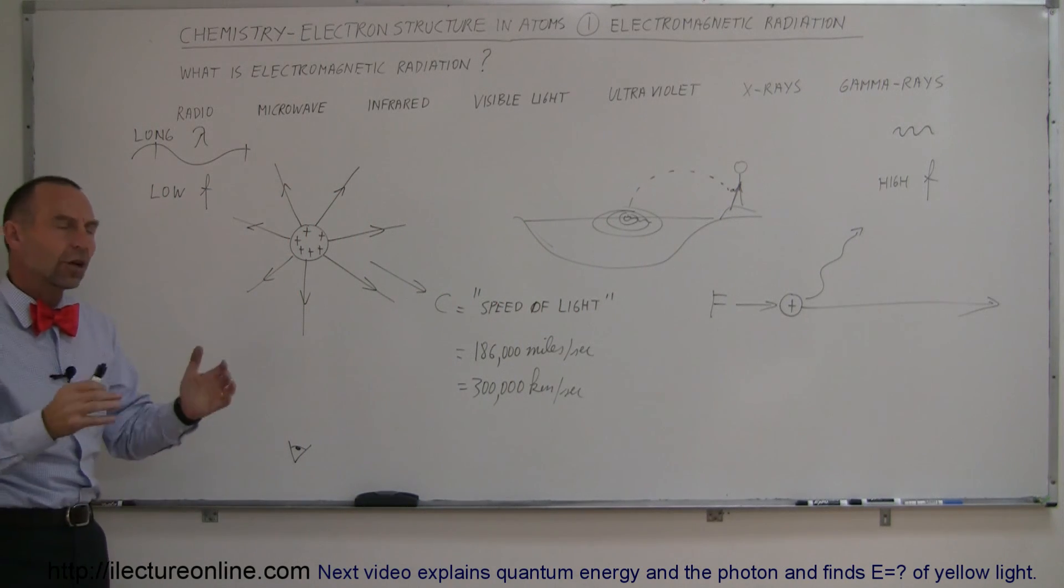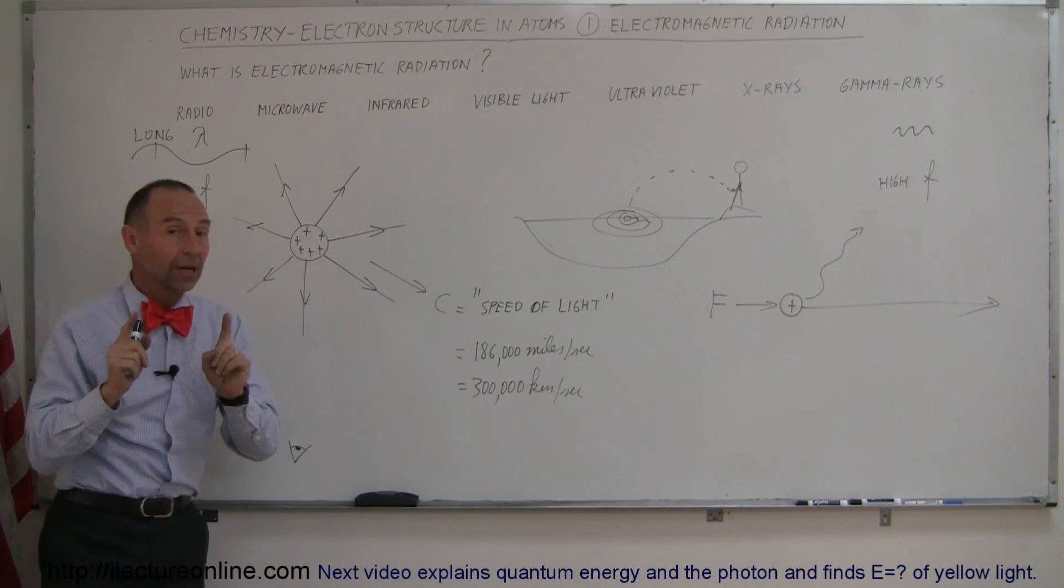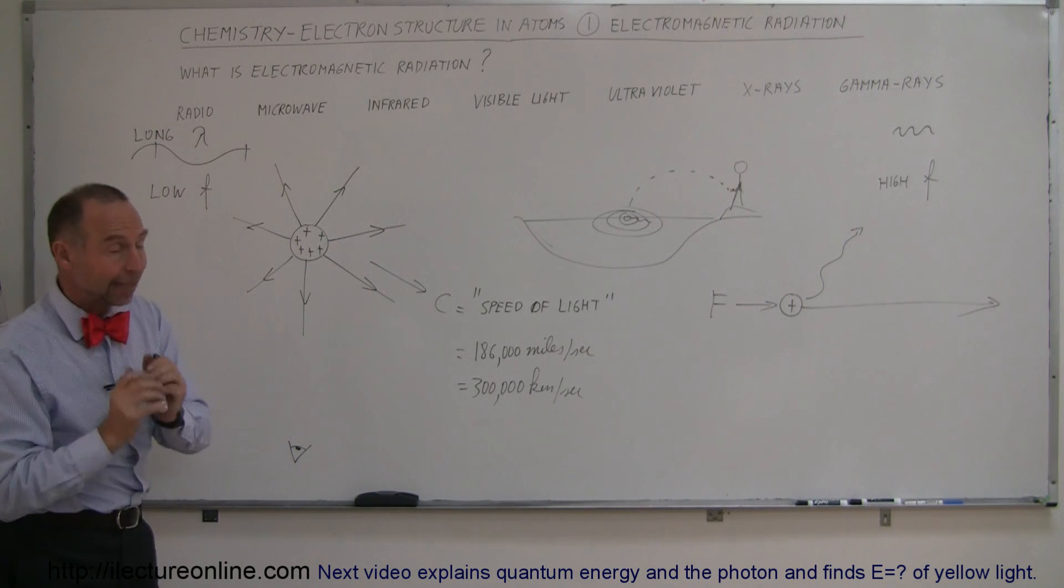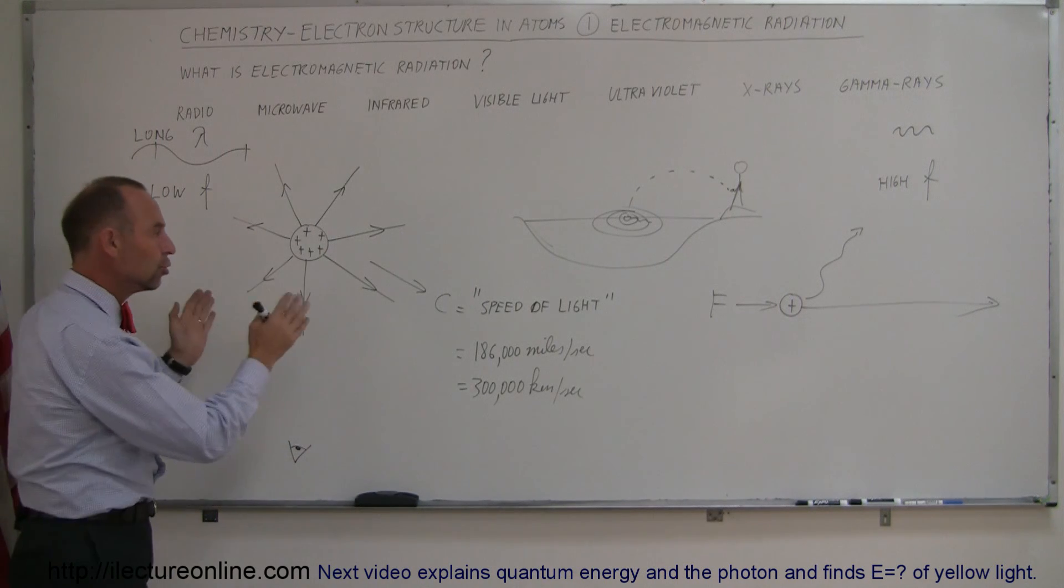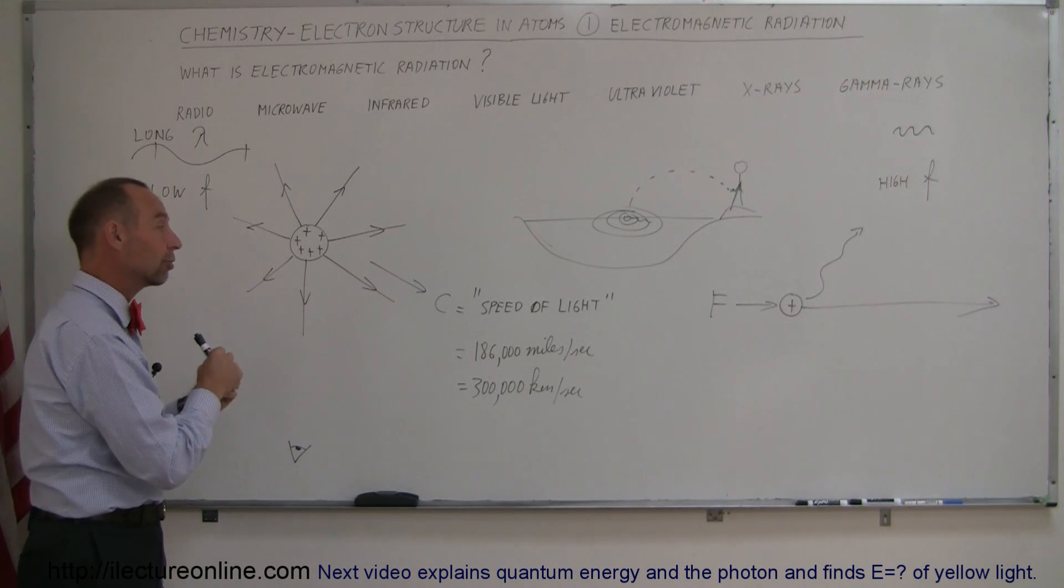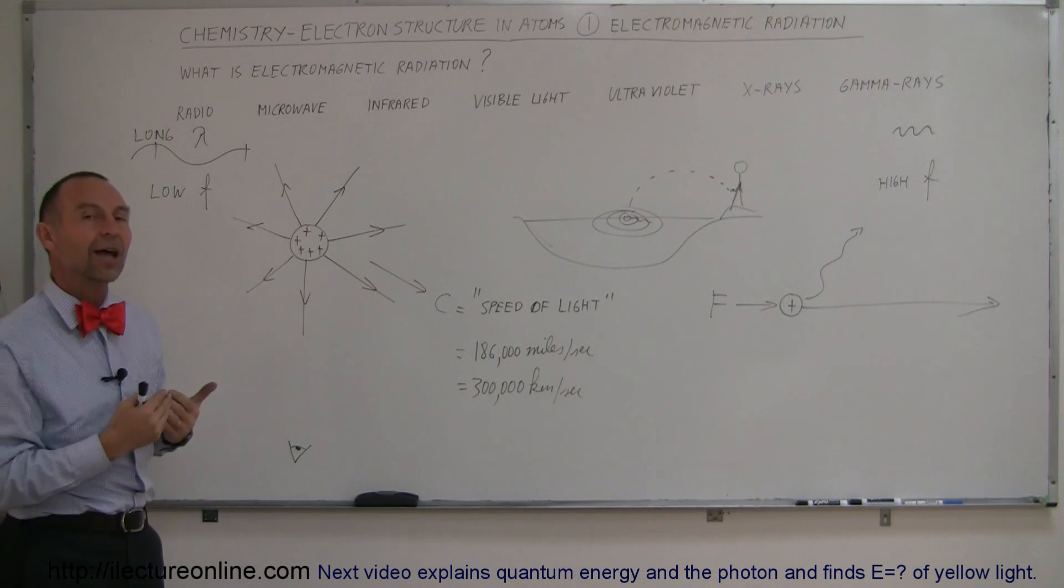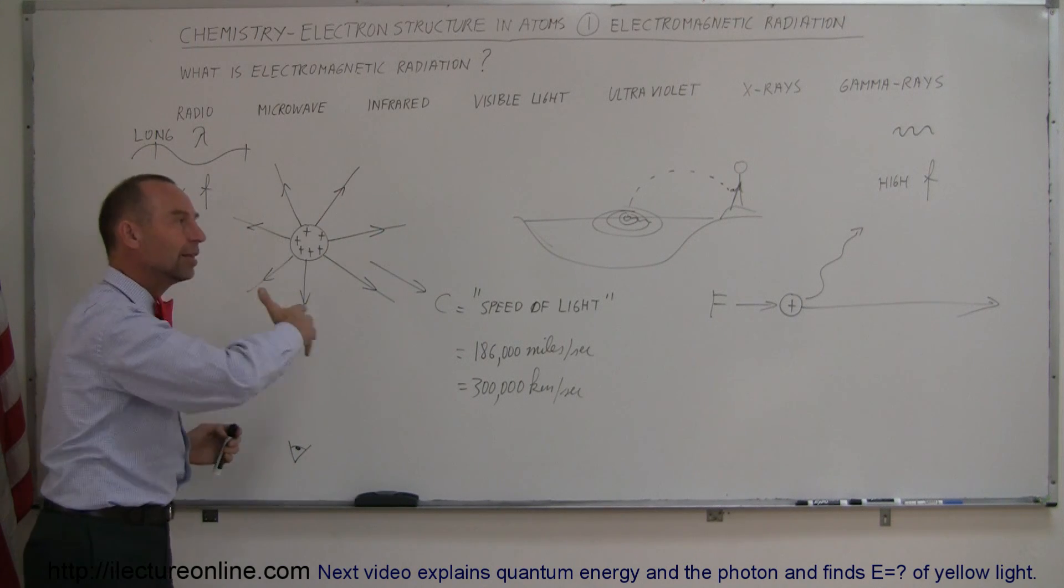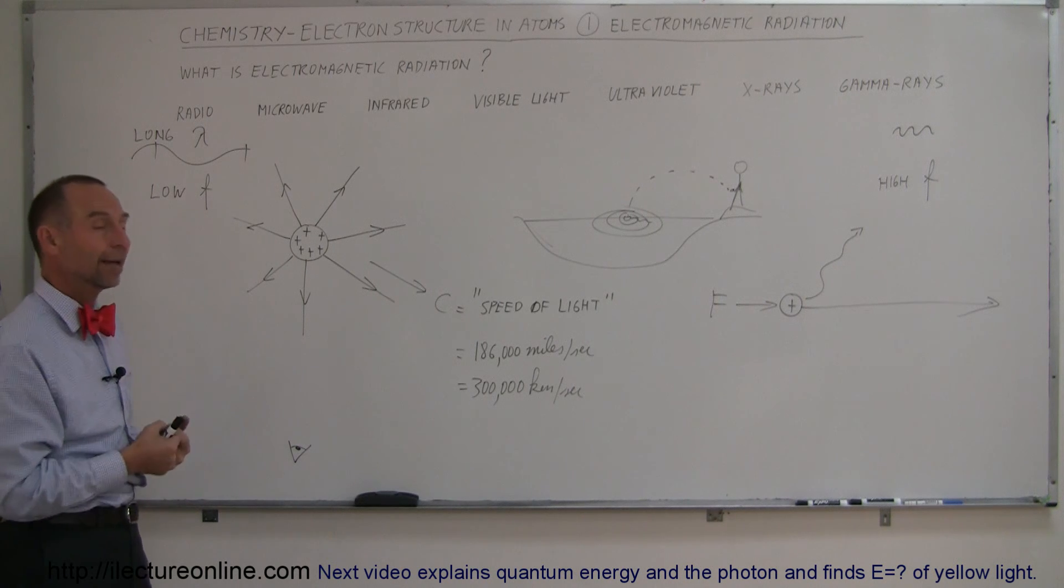So why do we study electromagnetic radiation so that we can understand the electron structure in atoms? Because there's a very close relationship between electromagnetic radiation and electrons and how electrons interact within the orbits of atoms due to the properties of electromagnetic radiation and how similar electrons are to this kind of radiation. So in the next so many videos, we'll go ahead and try to tie it all up so we have a full understanding of how the atom is structured based upon these characteristics of electromagnetic radiation and how electrons react in atoms.